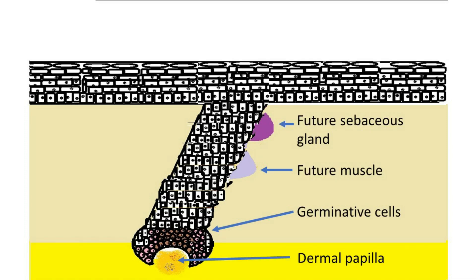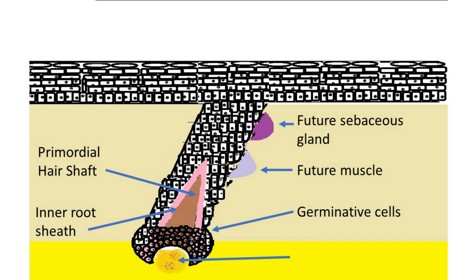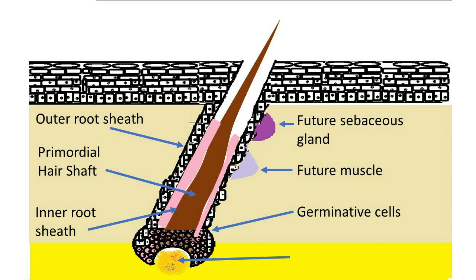As the bulbous hair peg forms, two more swellings appear on the hair follicle: the first swelling is for formation of the sebaceous gland, and the second is for formation of the erector pili muscle. Dermal cells beneath the tip of the bulb proliferate to form the dermal papilla and invaginate into the bulb. The epithelial cells of the hair bulb constitute the germinal matrix, which later gives rise to hair shaft and inner root sheath. Melanoblasts also invade the cells to produce melanin given to the proliferating germinal matrix cells.